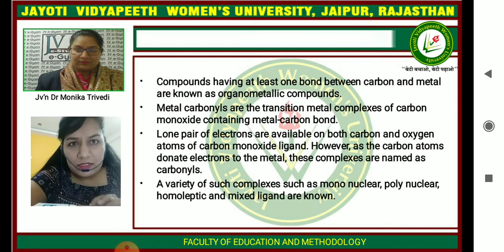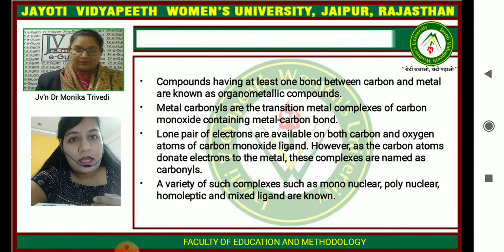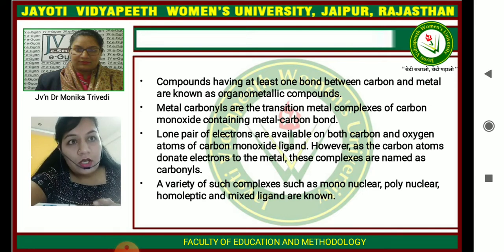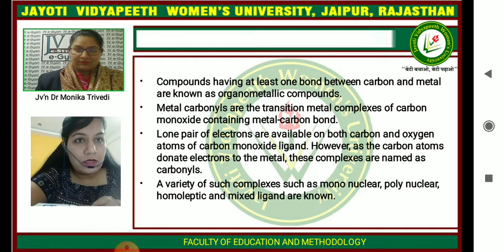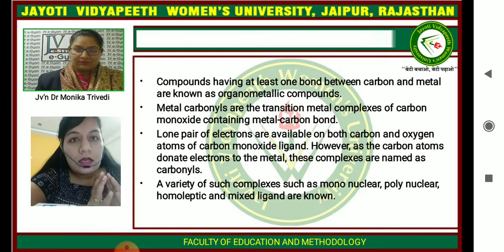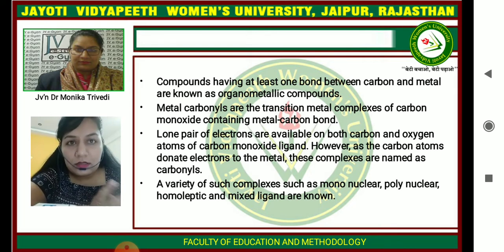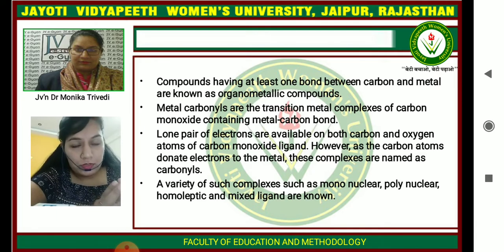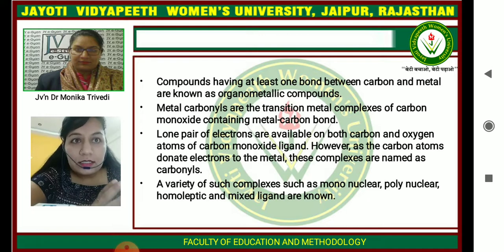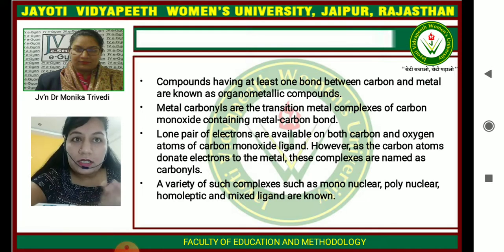In previous classes we have learned about boranes, higher boranes, carbenes, metal boranes, and metal carbenes. Now we have to learn about metal carbonyl compounds. These kinds of compounds have at least one bond between the carbon and metal, and are also known as organometallic compounds.